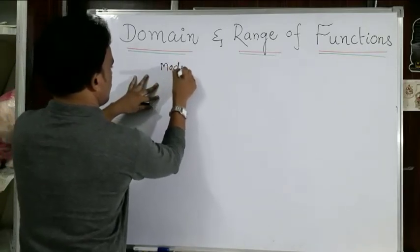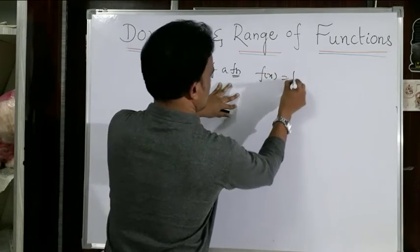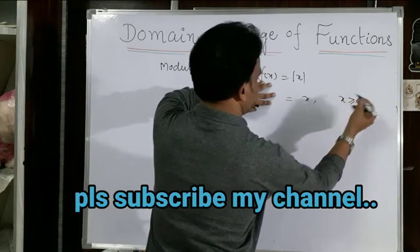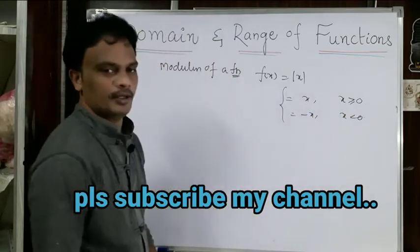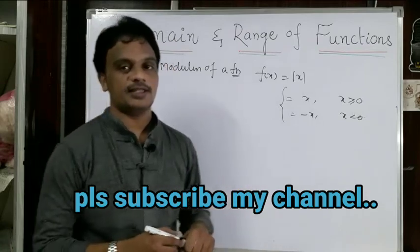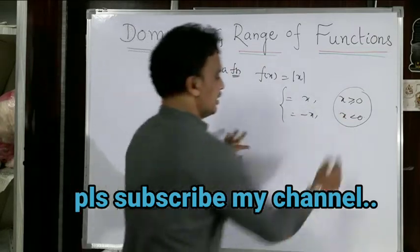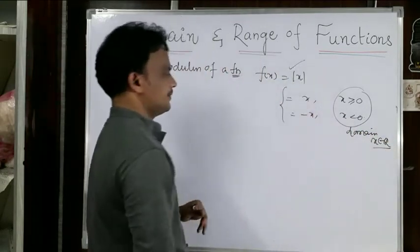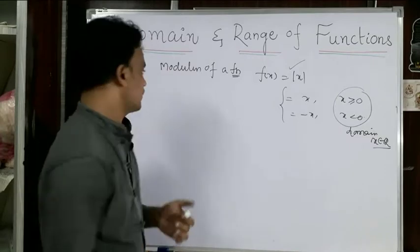Now let us discuss the modulus function: f(x) = |x|, defined as x when x ≥ 0 and -x when x < 0. Since modulus of x is never negative, the function can be defined for all values of x. So the domain of the modulus function is all real numbers.